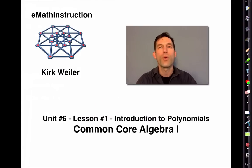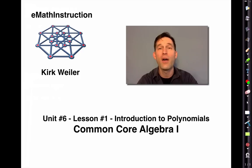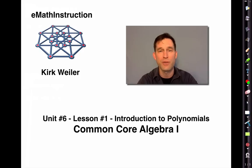That was our first lesson on polynomials. We've seen that polynomials act a lot like integers — they have decreasing powers on x, they have coefficients, and they add like integers do. When you add a polynomial to a polynomial, you get another polynomial. In future lessons we're going to find out how to multiply polynomials — we'll leave division to Algebra 2 — and we'll even learn how to un-multiply polynomials, what's known as factoring. That's been Unit 7, Lesson 1 from eMath Instruction. I'm Kirk Weiler, and until next time, keep thinking and keep solving problems.